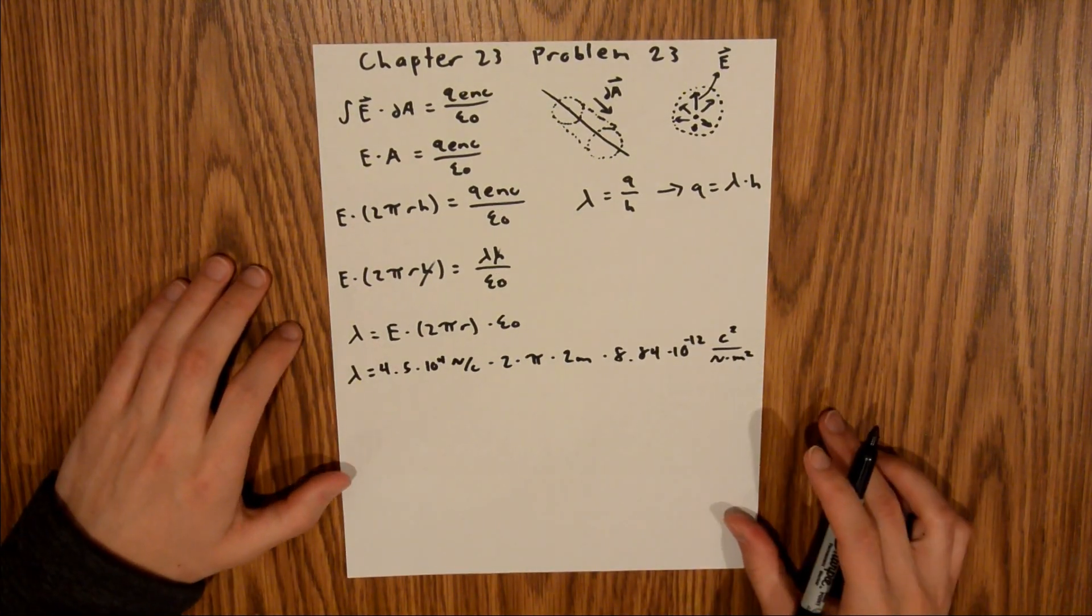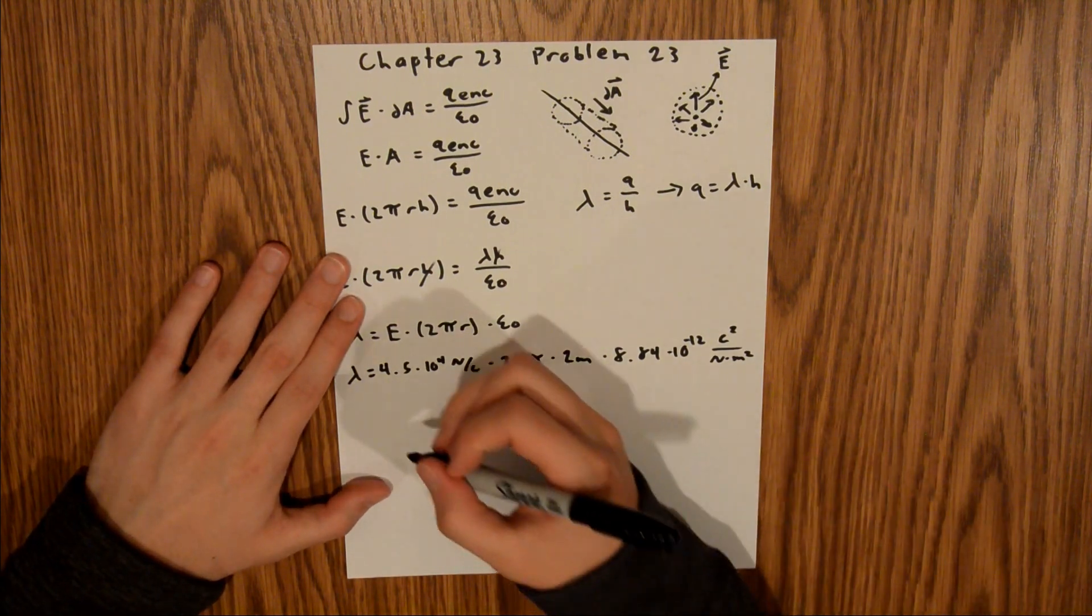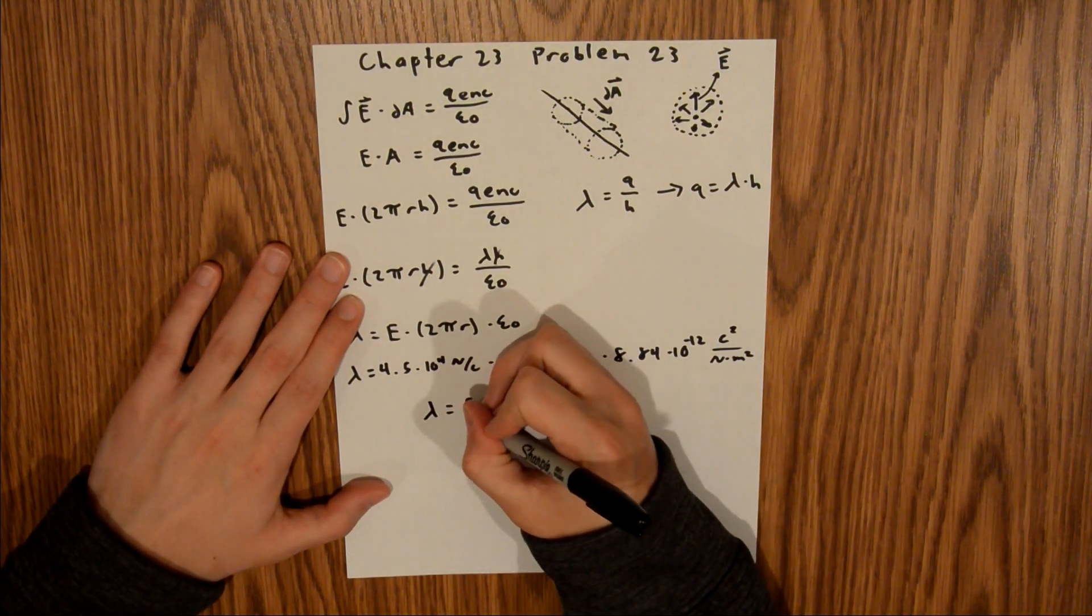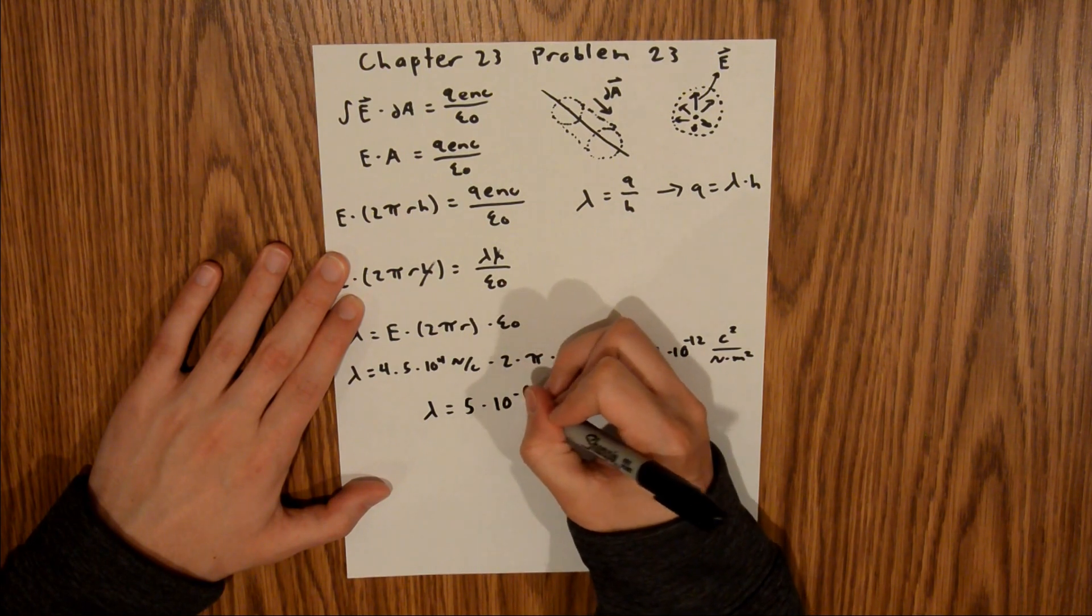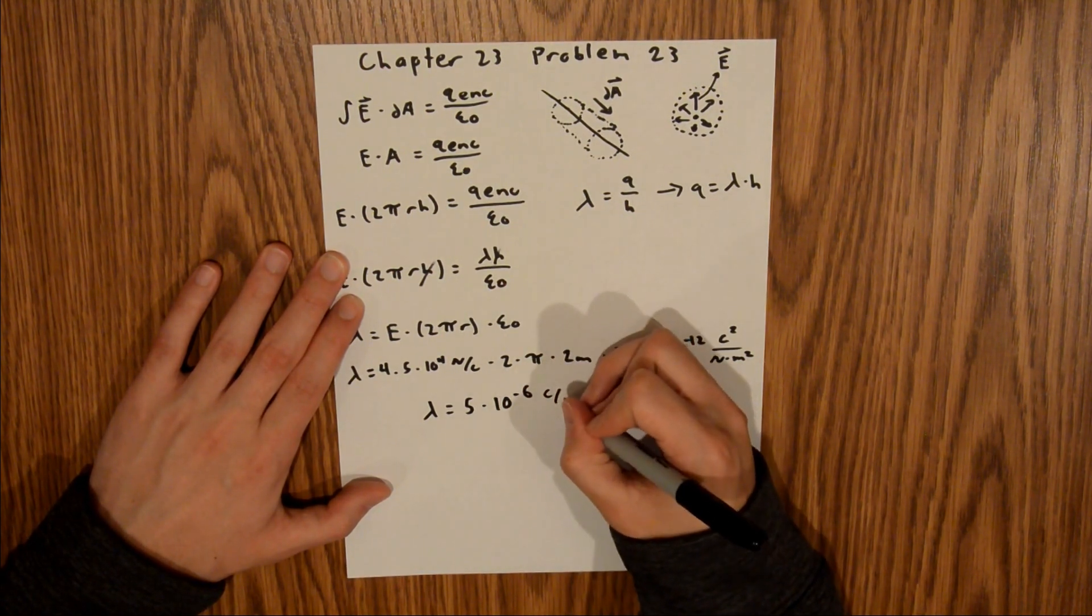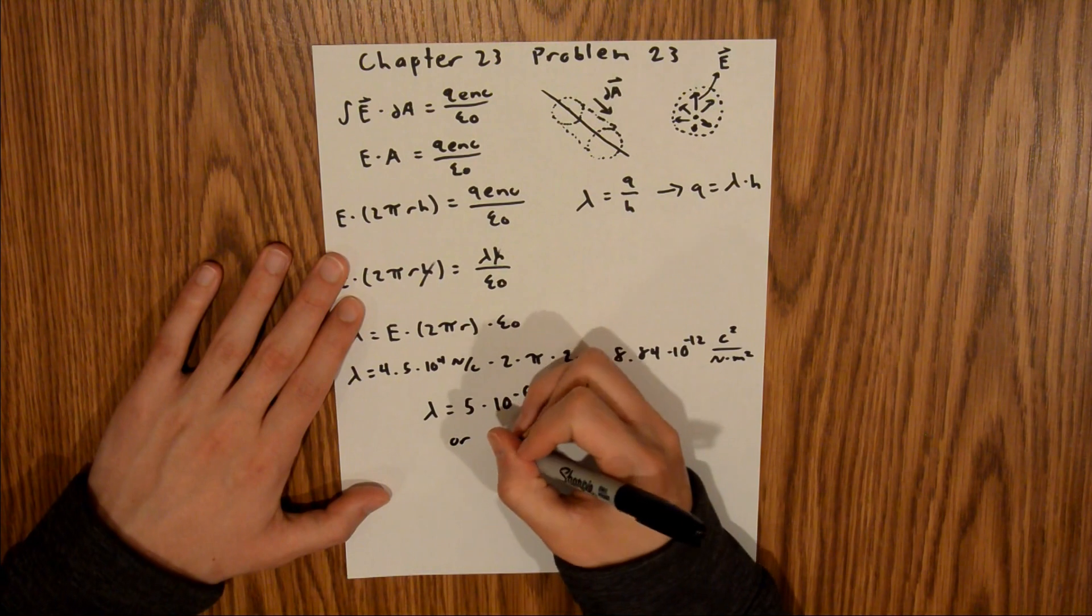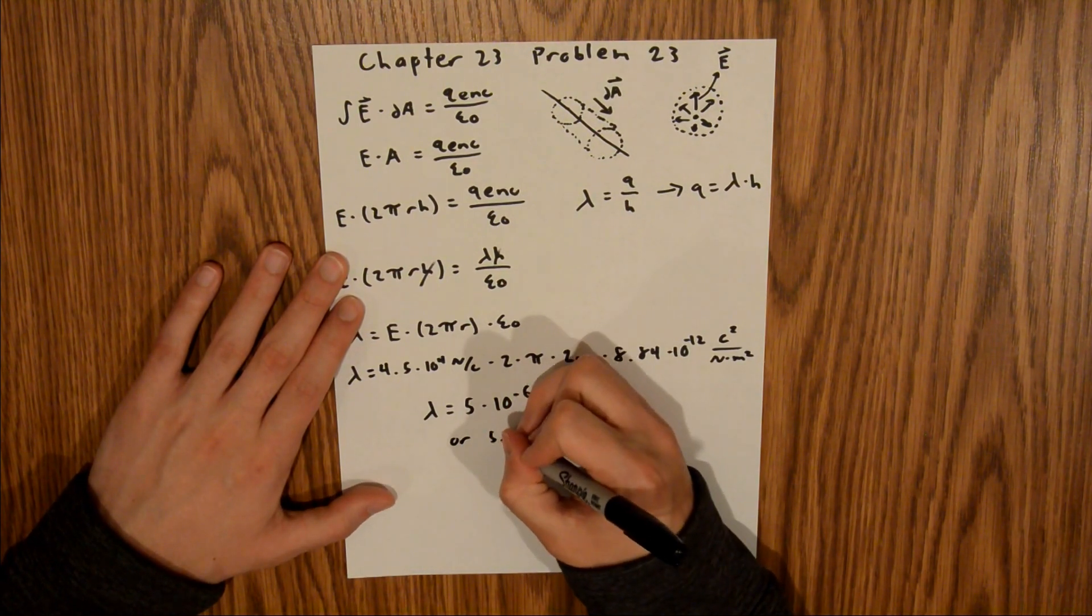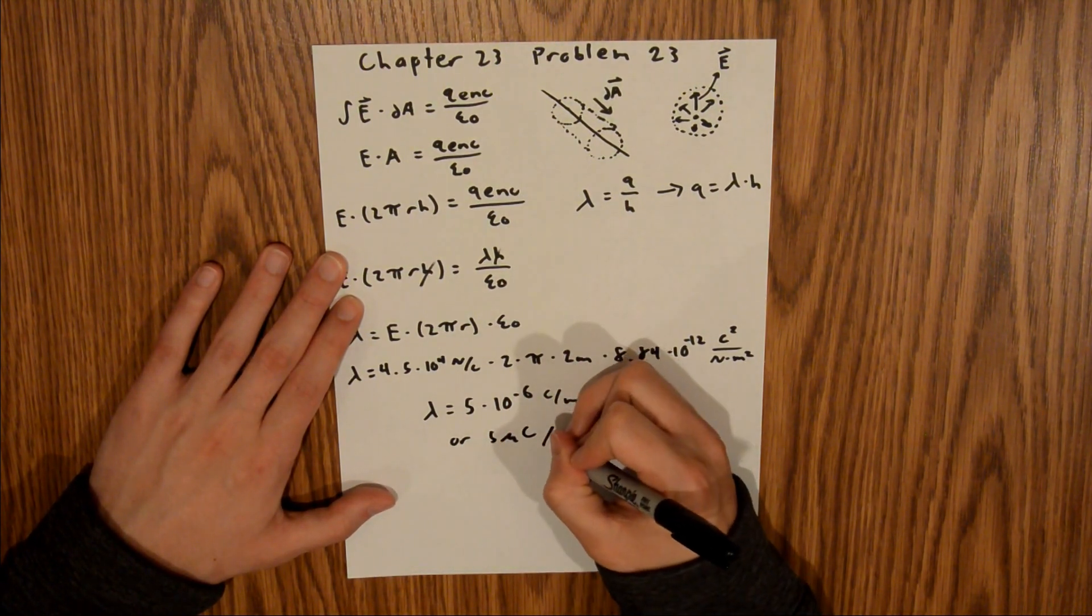And if you plug all of those numbers into your calculator, you should find that the linear charge density is equal to 5 times 10 to the negative 6th coulombs per meter, or you could say that is 5 micro coulombs per meter.